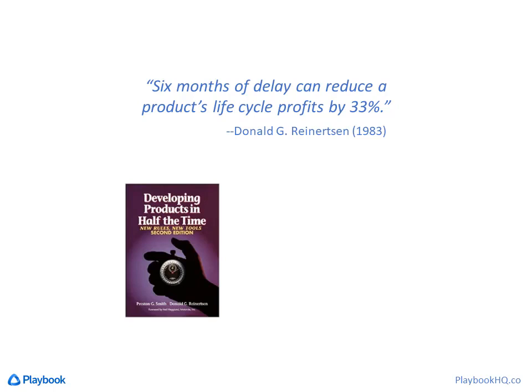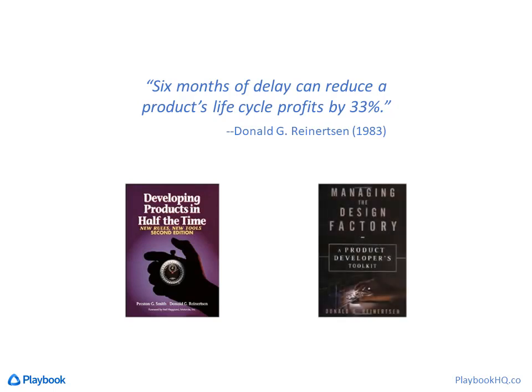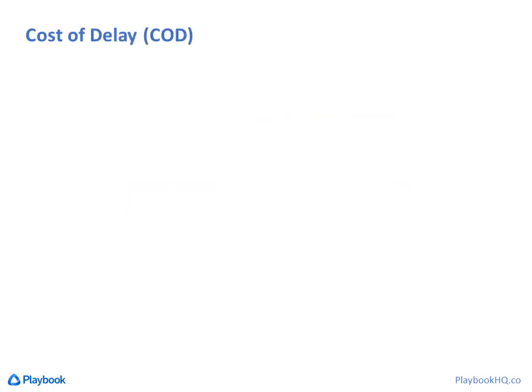He later co-authored a book with Preston Smith called Developing Products in Half the Time, which is still available on Amazon — I'll put a link in the description. The spreadsheet I'm about to show came from chapter two of that book. In Don's second book, Managing the Design Factory, he goes into more detail on various delay scenarios. Either book is great, but if you only have time for one, I'd get Managing the Design Factory.